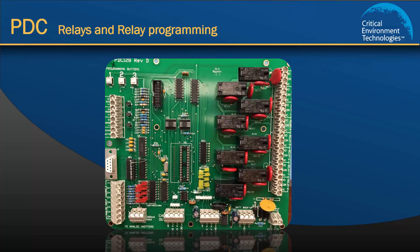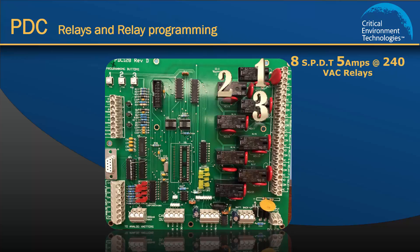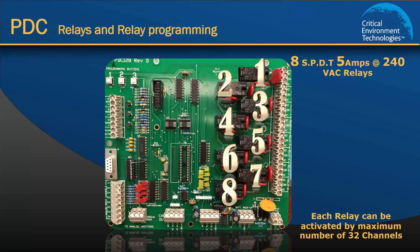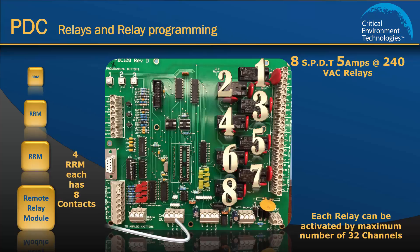If we take a closer look at the PDC from the inside, we notice that there are 8 failsafe relays. Each relay can be configured to monitor up to 32 channels for any alarm condition. In addition, up to 4 external remote relay modules can be added, each with their own 8 relays that can be configured and connected to the network. In this tutorial we will not be covering how to configure the remote relay modules — we are only looking at the relays inside the PDC.